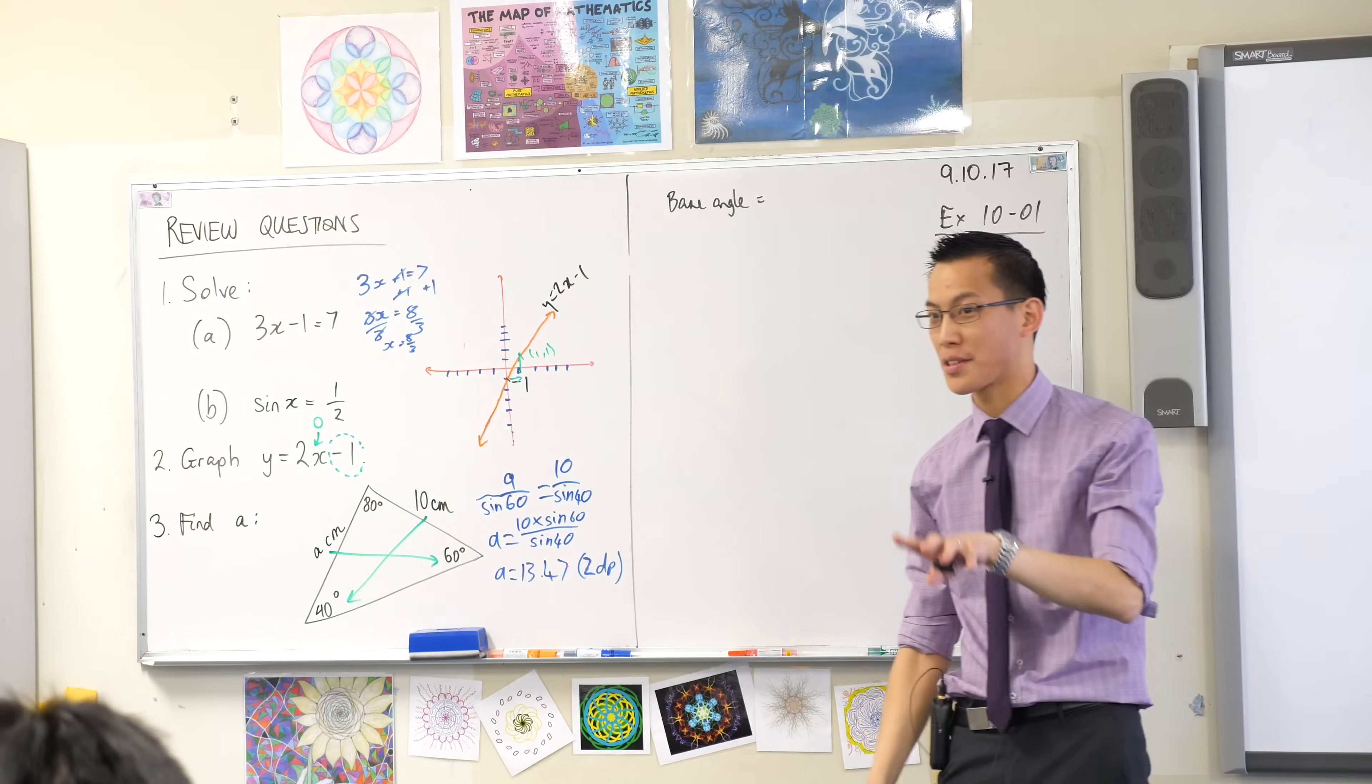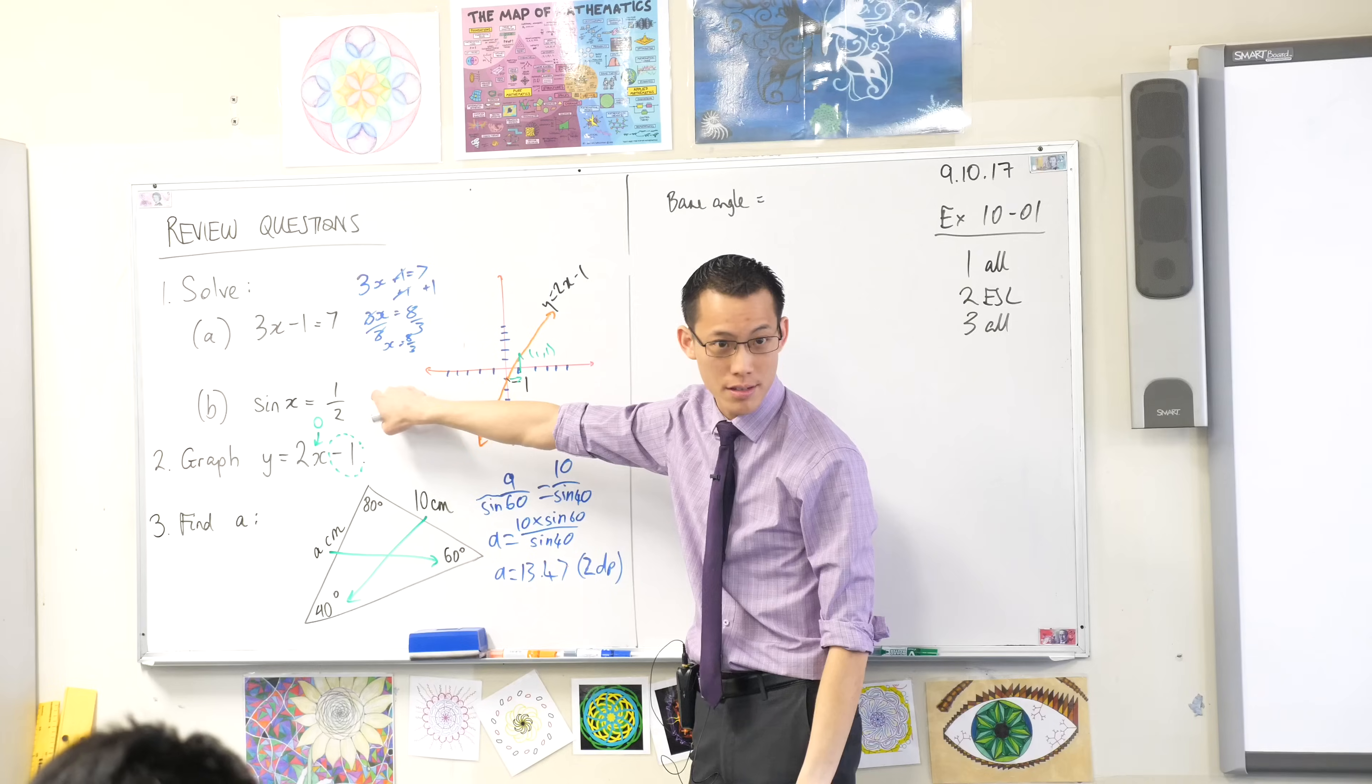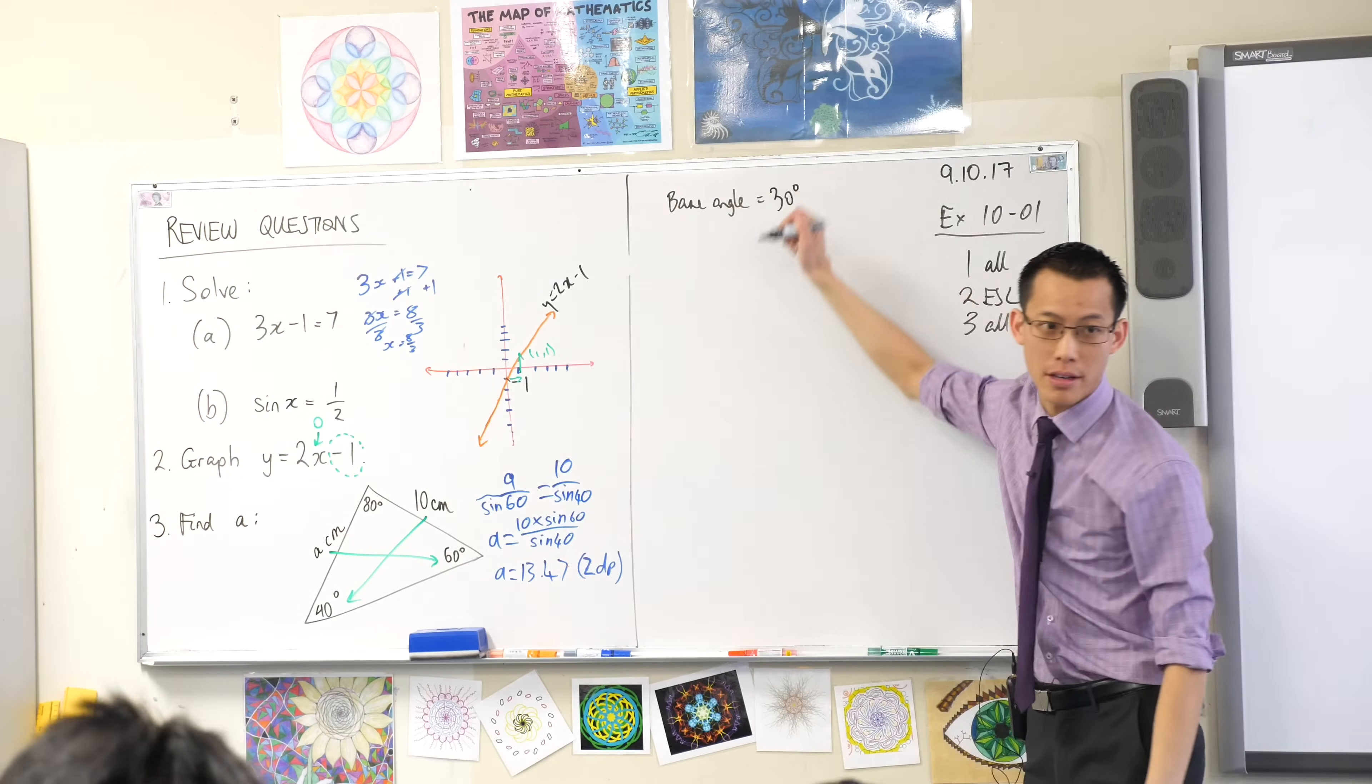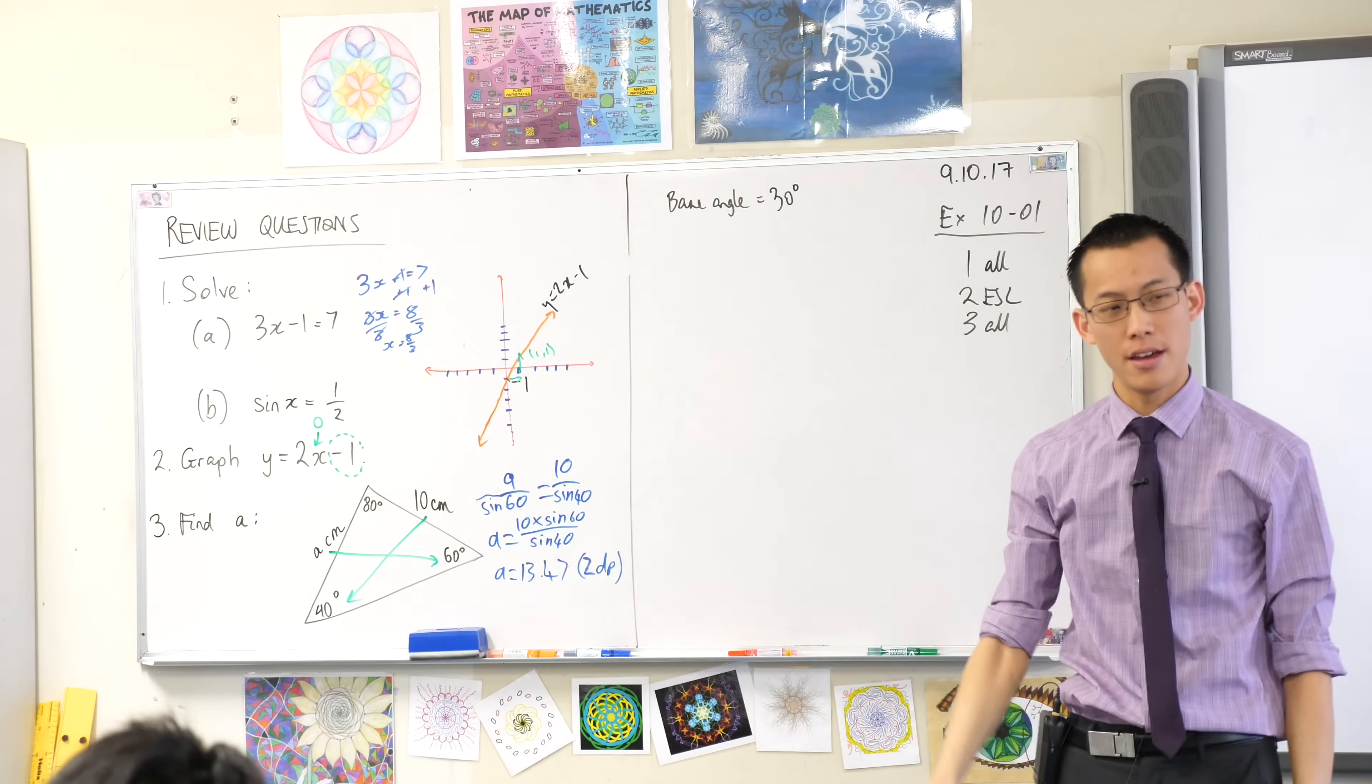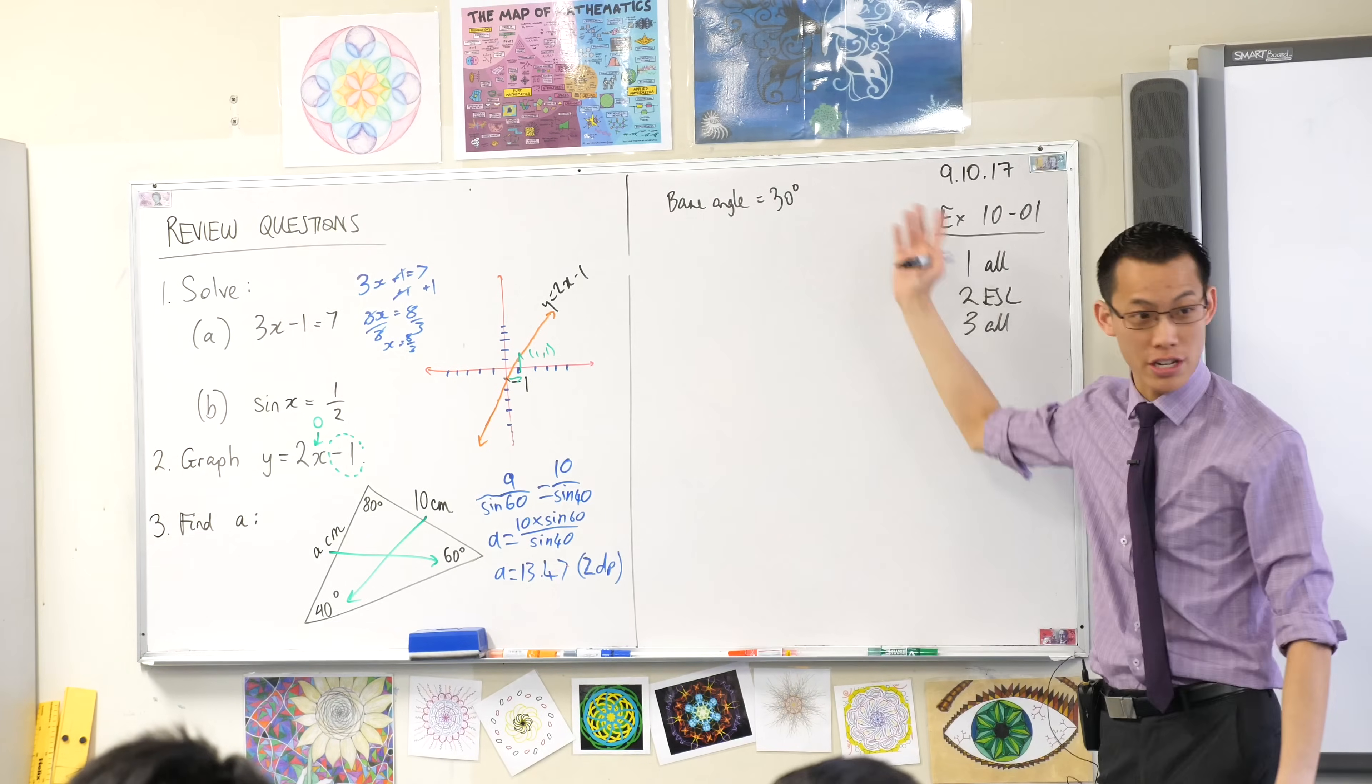The base angle's not X. Yeah, I use shift, right? I go shift sine this. Sine inverse of a half. That should give you 30 degrees. Okay? Your calculator should tell you that, right? Sine inverse of a half will give you this 30 degree angle.